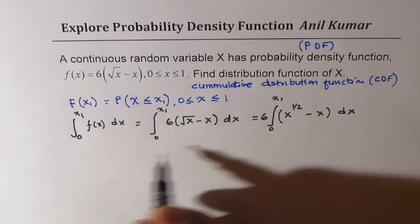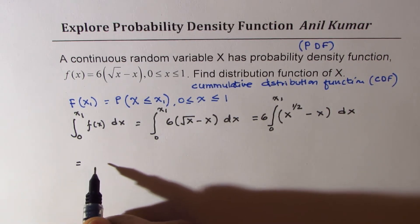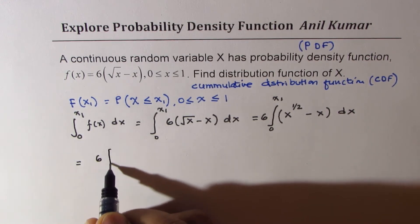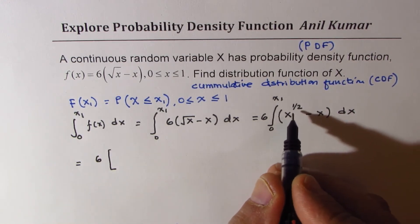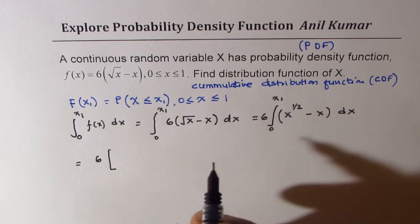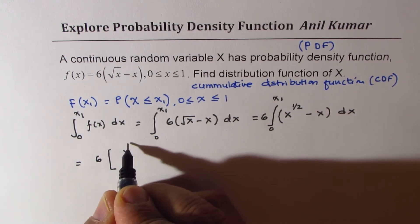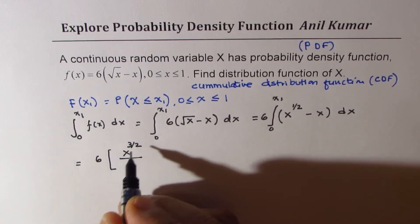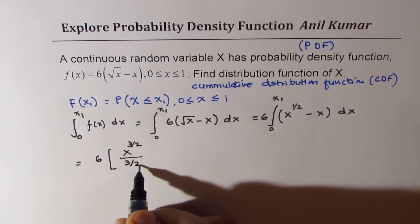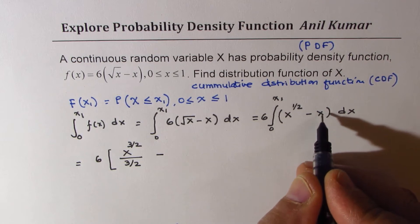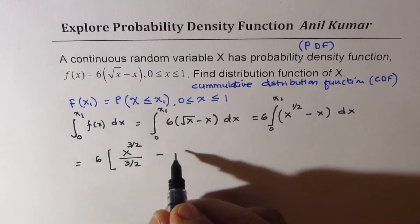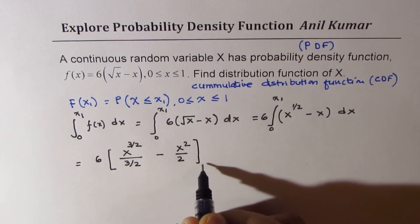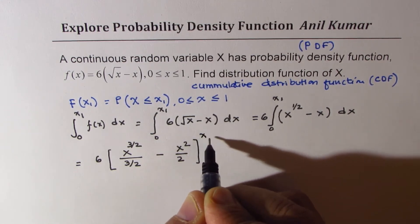Now, applying the simple rules, we can write this as 6 times: x to the power of 3 by 2 divided by 3 by 2, minus x squared over 2, from 0 to x1.